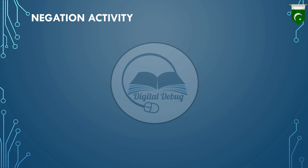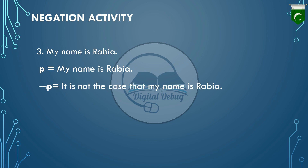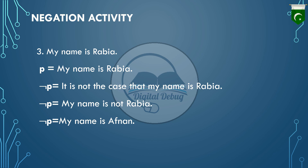For the proposition 'My name is Rabia,' represented with variable P, the negation of P is: 'It is not the case that my name is Rabia,' or 'My name is not Rabia,' or 'My name is Afnan.' Let's say the speaker's name is actually not Rabia, so its truth value is false, and the negated statement's truth value will be true.